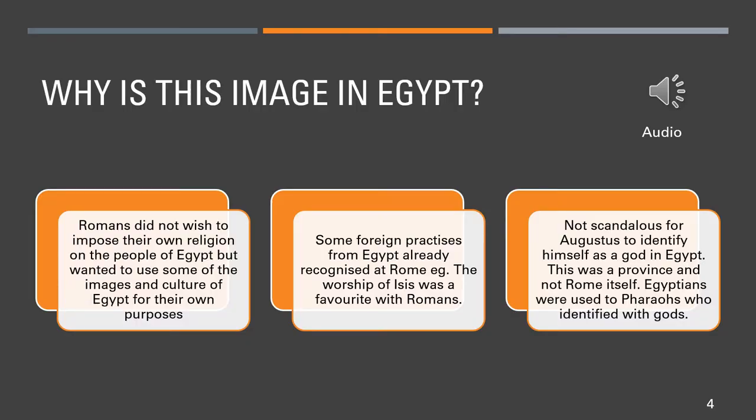Why is this image on the Kalabsha Gate in Egypt? Well, number one, the Romans didn't wish to impose their own religion on the people of Egypt, but wanted to use some of the images and culture of Egypt for their own purposes. Number two, some foreign practices from Egypt were already recognised at Rome — the worship of Isis was a favourite with the Romans. We mustn't forget that Cleopatra herself saw herself as the modern physical embodiment of Isis; she was Isis for all intents and purposes. And it is not scandalous for Augustus to identify himself as a god in Egypt — this is a province and not Rome itself.